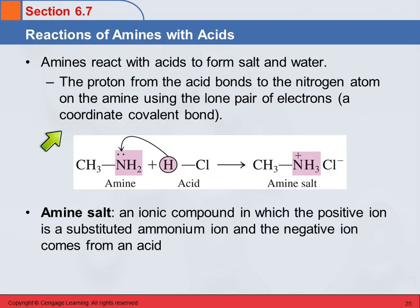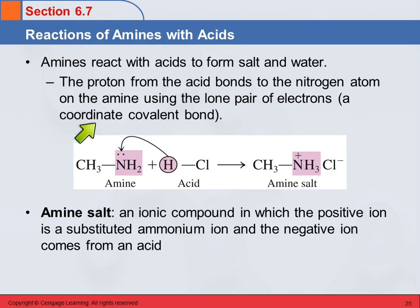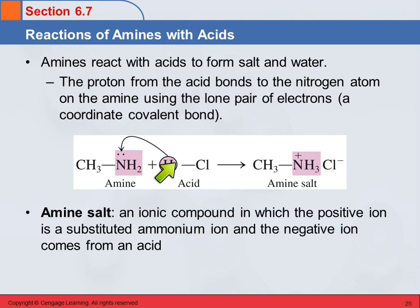The proton from the acid is going to bond to the nitrogen using that lone pair, and this is called a coordinate covalent bond. Here we have the amine and hydrochloric acid. The acid donates the proton, the base accepts the proton, and we end up with an amine salt.